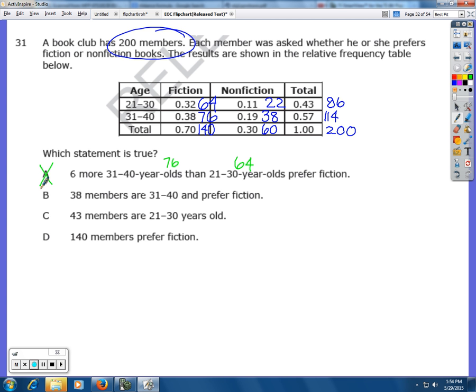B: 38 members are 31 to 40 and prefer fiction. If I go to 31 to 40 prefer fiction I actually have 76. That's not 38. C: 43 members are 21 to 30 years old. If you look at 21 to 30 years old and you go to the total number that's 84 or 86 people. That's not 43. Lastly, 140 members prefer fiction. If you look at the total number of people that prefer fiction it's 140. So D is the correct answer.